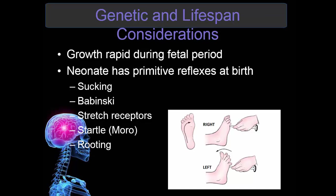Looking at genetic and lifespan considerations, growth is rapid during the fetal period. Neonates have primitive reflexes at birth, including sucking, the Babinski sign, stretch receptors, the startle (Moro) reflex, rooting, stepping reflex, and the grasp reflex. By the end of the first month, all primitive reflexes have disappeared except for the Babinski, which is normal through the age of two. If it is present after age two, this could indicate cerebral damage.